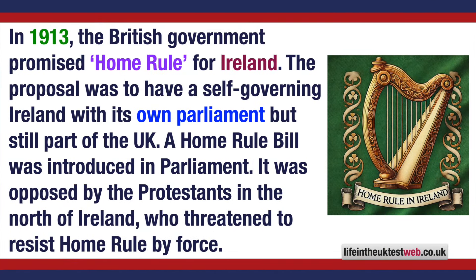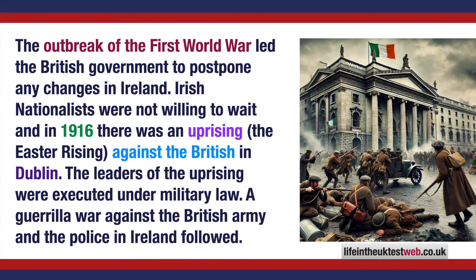In 1913, the British government promised Home Rule for Ireland. The proposal was to have a self-governing Ireland with its own Parliament, but still part of the UK. A Home Rule Bill was introduced in Parliament. It was opposed by the Protestants in the north of Ireland, who threatened to resist Home Rule by force. The outbreak of the First World War led the British government to postpone any changes in Ireland.